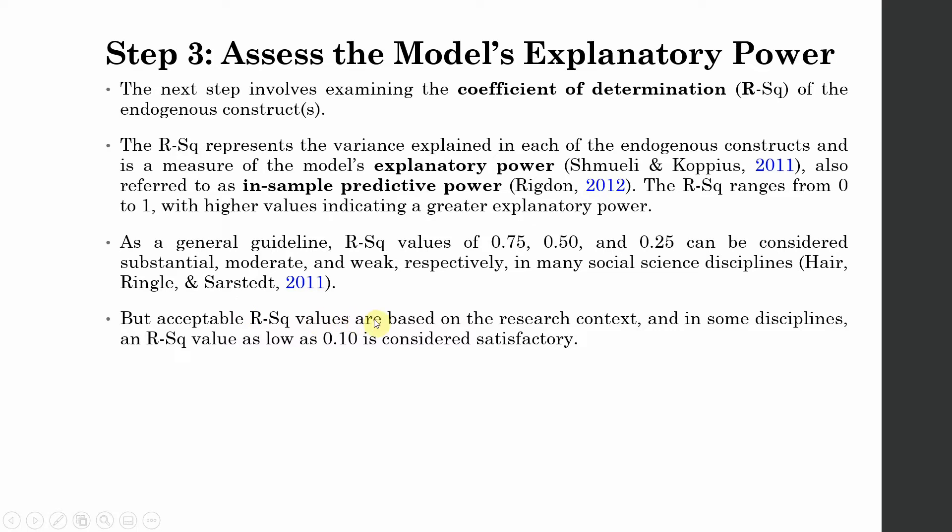But acceptable R-square values are based on research context, and in some disciplines an R-square value as low as 0.10, that is 10% variance in the endogenous construct, is considered satisfactory.